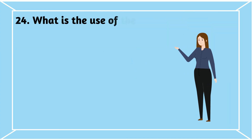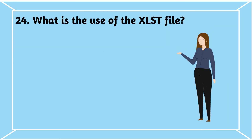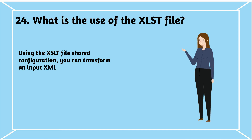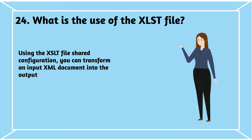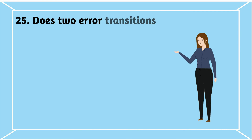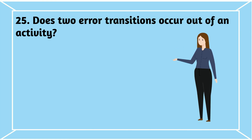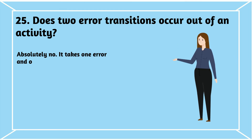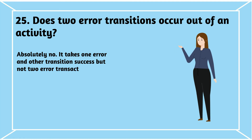Question 24: What is the use of the XSLT file? Using the XSLT file shared configuration, you can transform an input XML document into the output specified by XSLT. Question 25: Do two error transitions occur out of an activity? Absolutely no. It takes one error and one transition success, but not two error transactions.